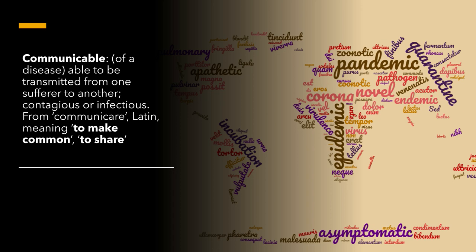Communicable — you might have heard it on the media. It means a disease that's able to be transmitted from one sufferer to another; it's infectious, basically — contagious or infectious. It's almost like the word communicate, and that's exactly where communicate comes from: to share, to make common — it's a Latin word. You're sharing things in common; in this case, a disease. But to communicate, of course, is to share knowledge or information. It's the same etymological root. For a disease, communicable is not a good thing — it means it can spread from one person to another.